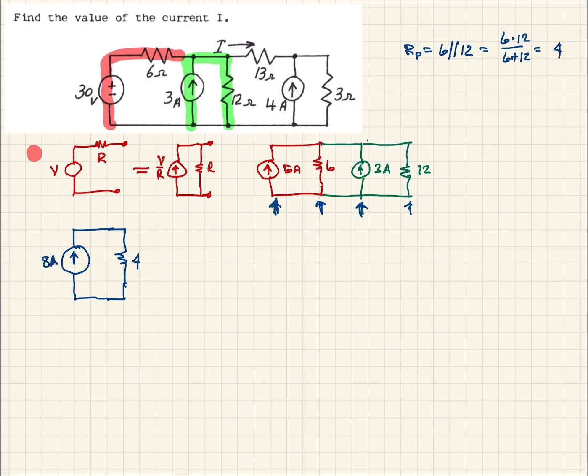So 8 amps with 4 ohms. Now we want to come back and look at this part of the circuit here. We can look at that and say, okay, well first, let's take this part of the circuit and let's convert that back.